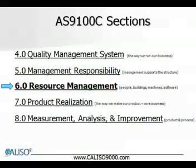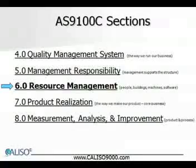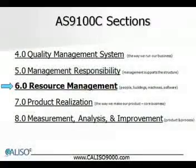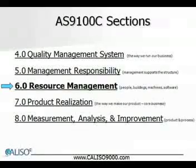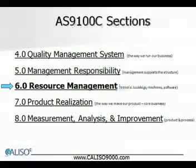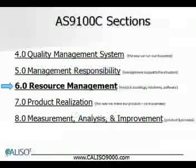Section 6 is titled Resource Management. The resources it applies to are people, buildings, machines, equipment, software, or whatever is needed to make your product or provide the service. The organization must manage its infrastructure, resources, and work environment related to the realization process and the product or service. There are really no additional requirements beyond ISO 9001 in Section 6 of AS9100.